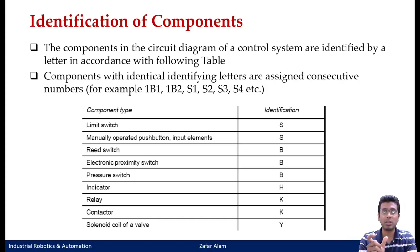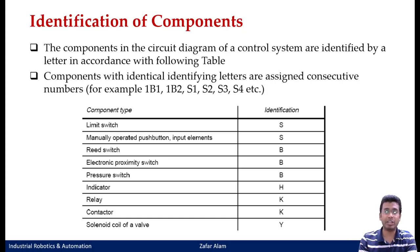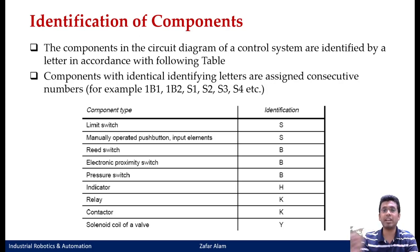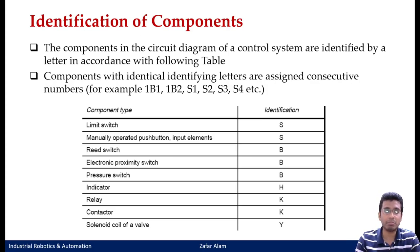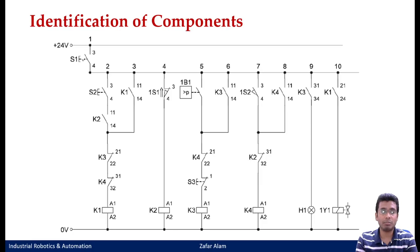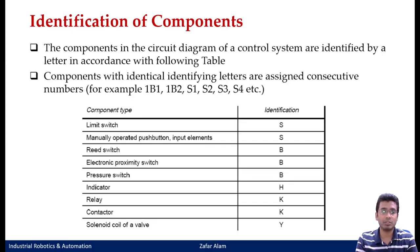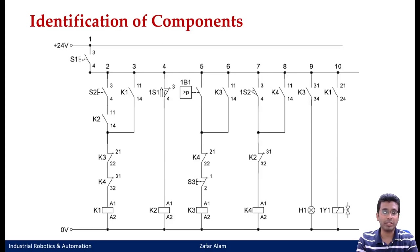Similarly, suppose I have a 5 by 2 double solenoid valve to control my fifth cylinder — I would name those solenoid valves 5Y1 and 5Y2. The letter 5 denotes these solenoid valves are controlling my cylinder 5A. Y1 and Y2 are the two ends of the solenoid of a 5 by 2 double solenoid valve to either extend or retract my cylinder number 5. These are the identifying letters used to name different types of components.